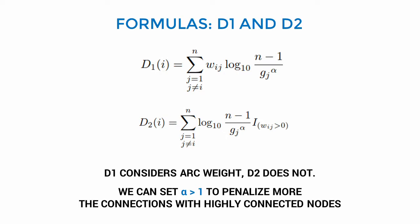I told you we have five formulas to calculate distinctiveness. The first two are shown here and are very similar. They only differ because in D1 we consider arc weights and in D2 we don't. In D1, to calculate distinctiveness of node i,